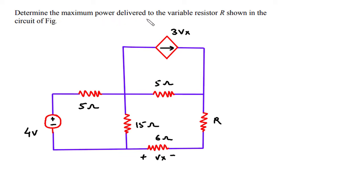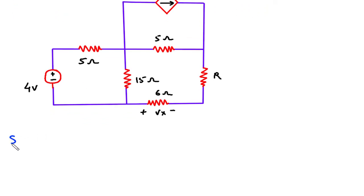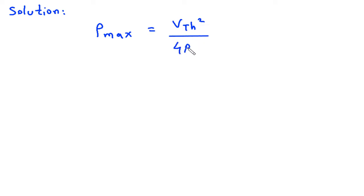Determine the maximum power delivered to the variable resistor R shown in the circuit. We have to find Pmax. Pmax is equal to Vth squared divided by 4Rth. We have to find Vth and Rth.